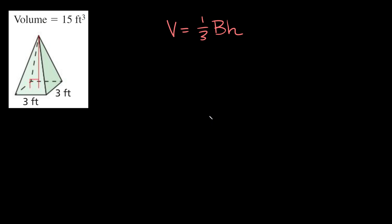What is up, you friggin geniuses? In this video, you're going to get a little smarter because I'm going to teach you how to find the height of a pyramid when you're given the volume. We can do this using the formula for the volume of a pyramid: the volume of a pyramid is equal to one third the base times the height.